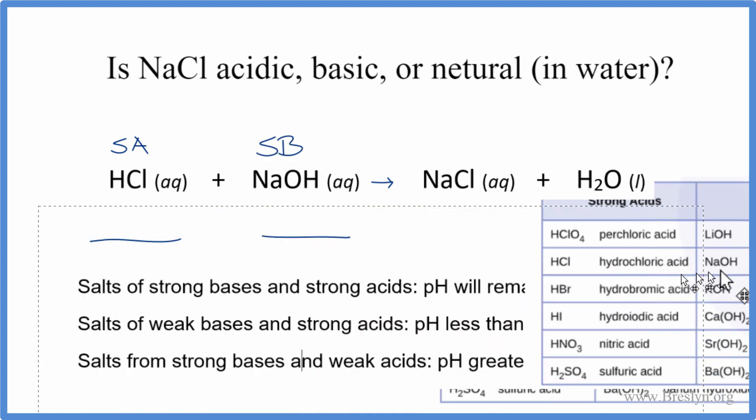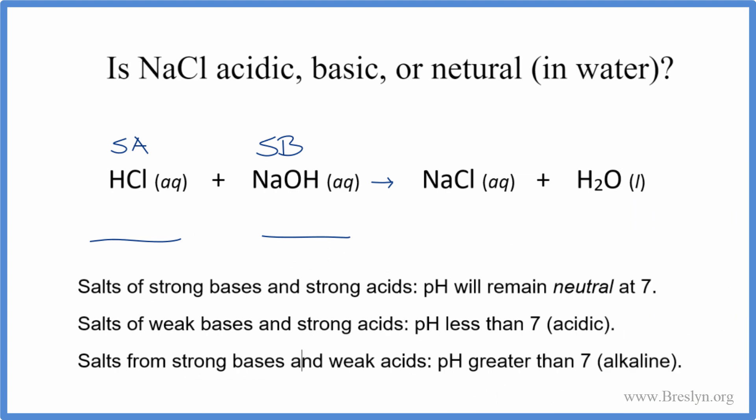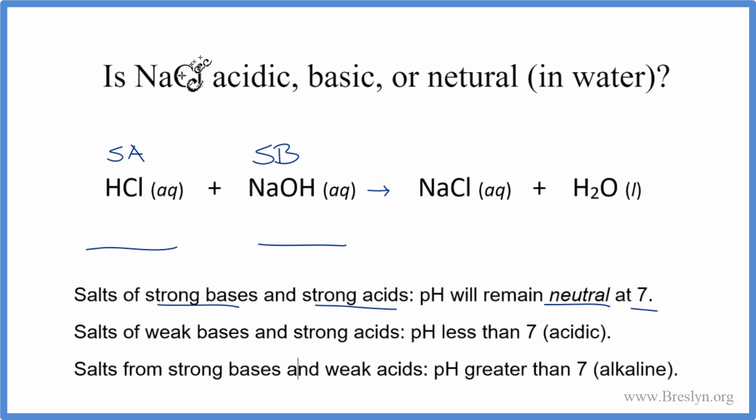So we have that. Let's go look at the rules to see what the pH will be when NaCl is dissolved in water. So we have a strong acid and a strong base. So here's strong acid and strong base. So a strong acid and a strong base, the pH will remain neutral at 7. So if we have NaCl dissolved in water, that's going to be neutral. pH will be 7.